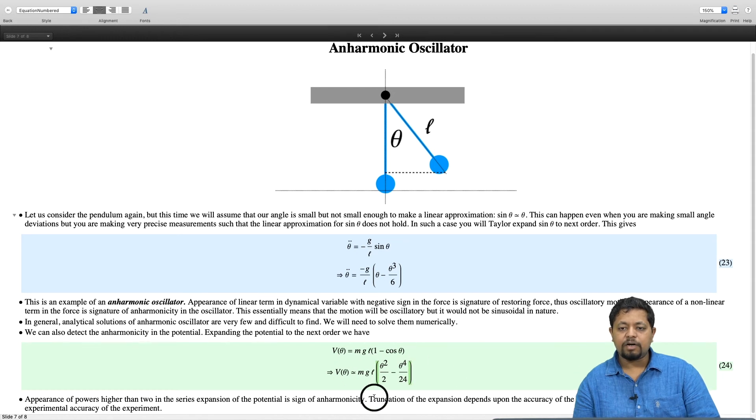So, that truncation will be good truncation when the angles are small but not small enough to be considered as simple harmonic oscillator. But it really depends on your accuracy of an experiment that you are doing or accuracy of a calculation that you are doing, you can decide where do you want to truncate.